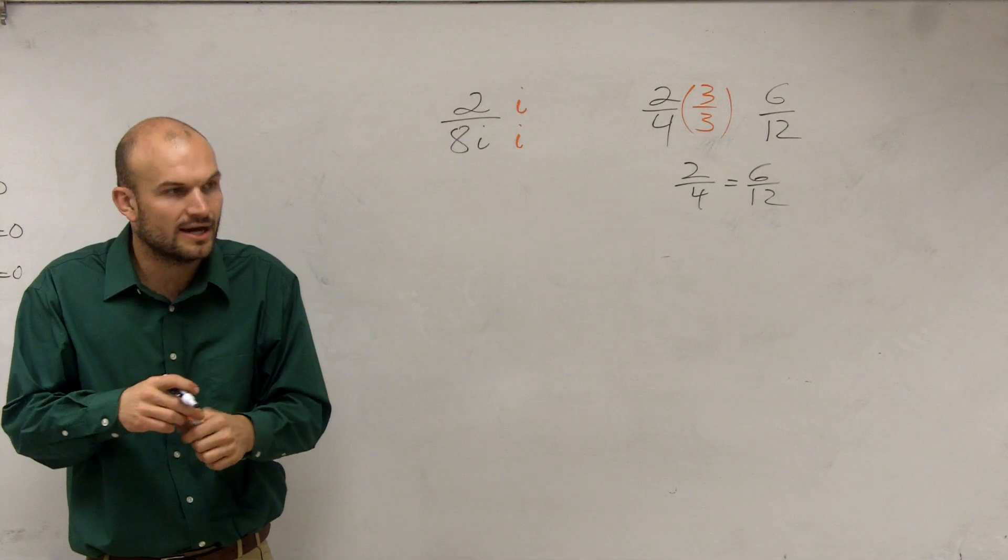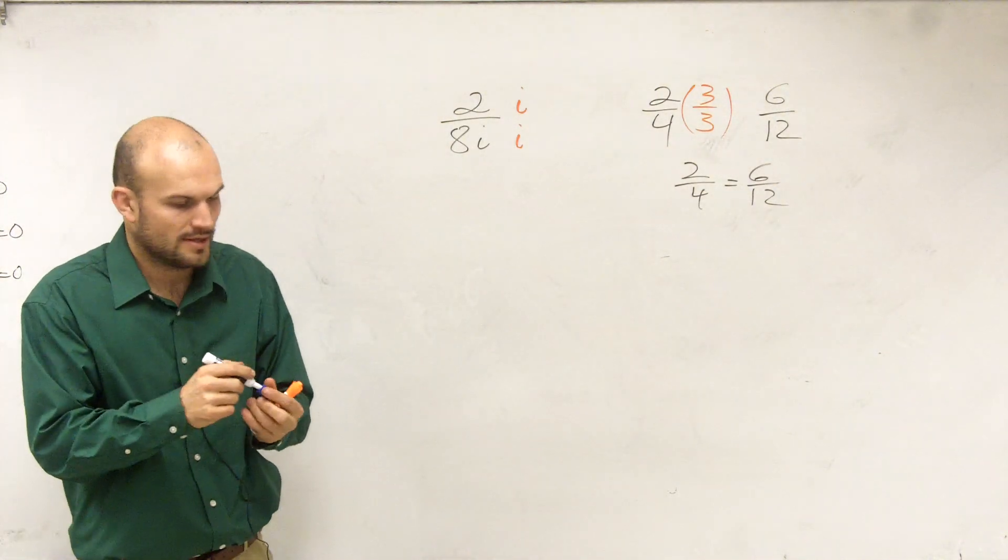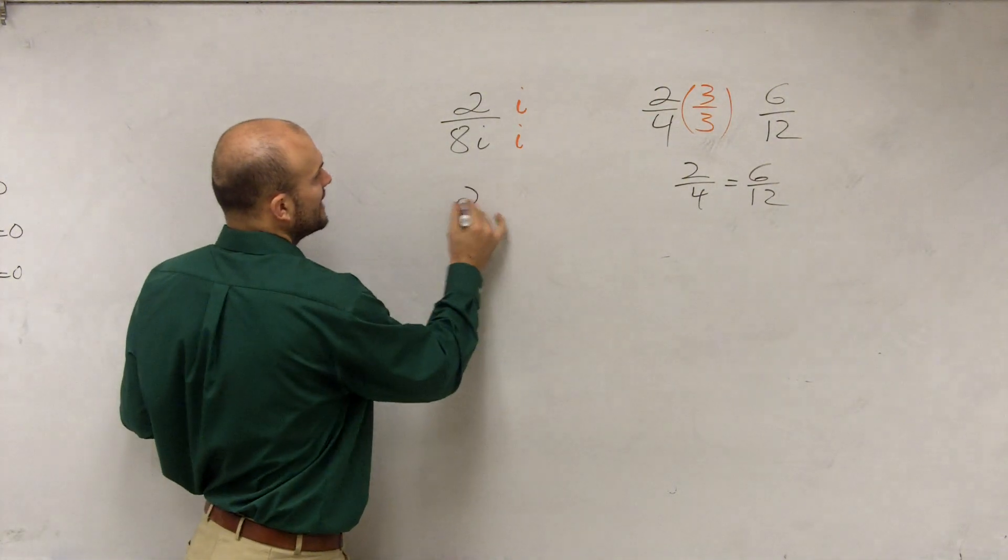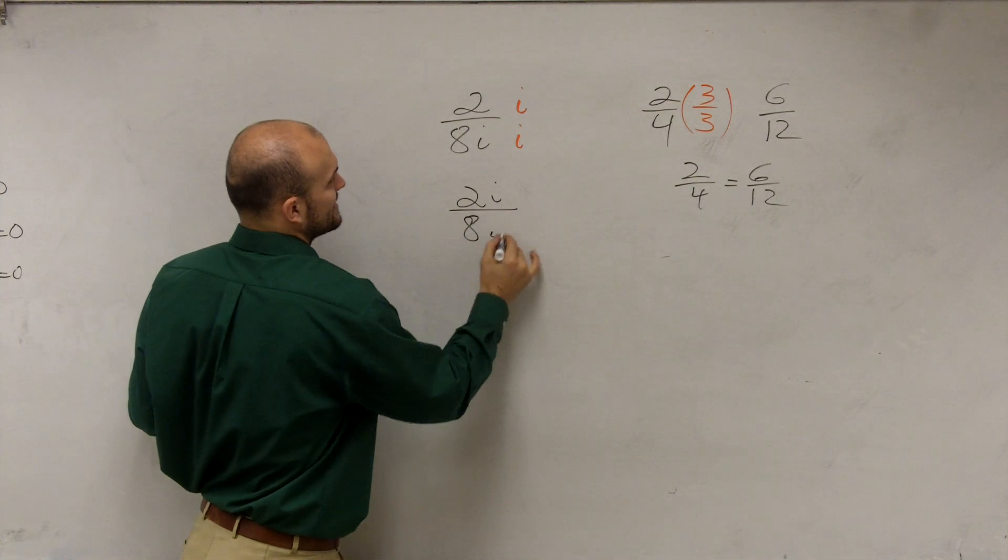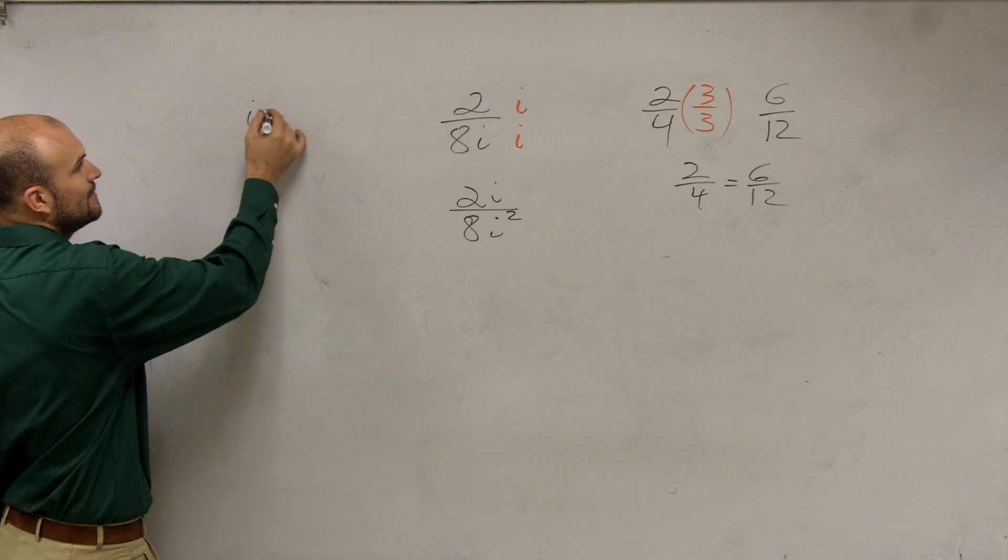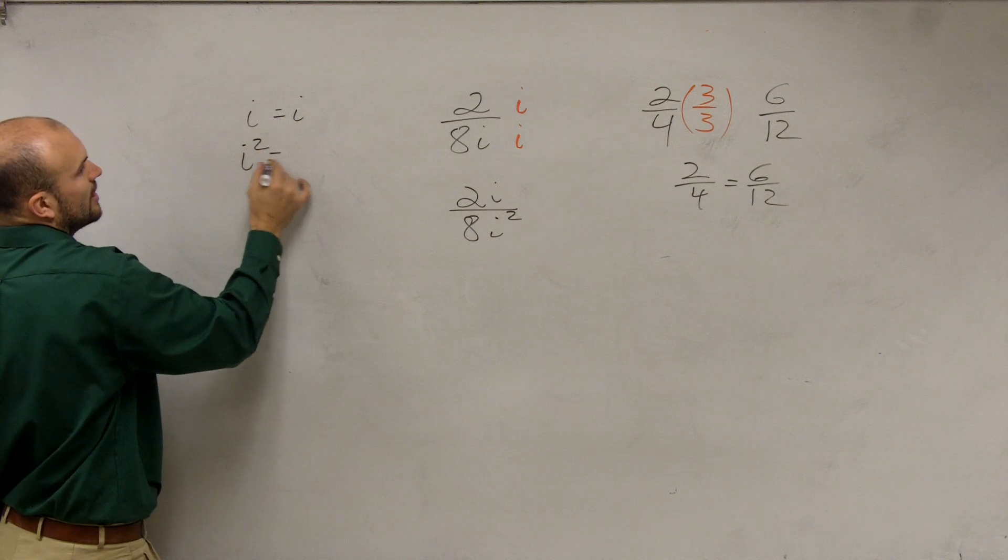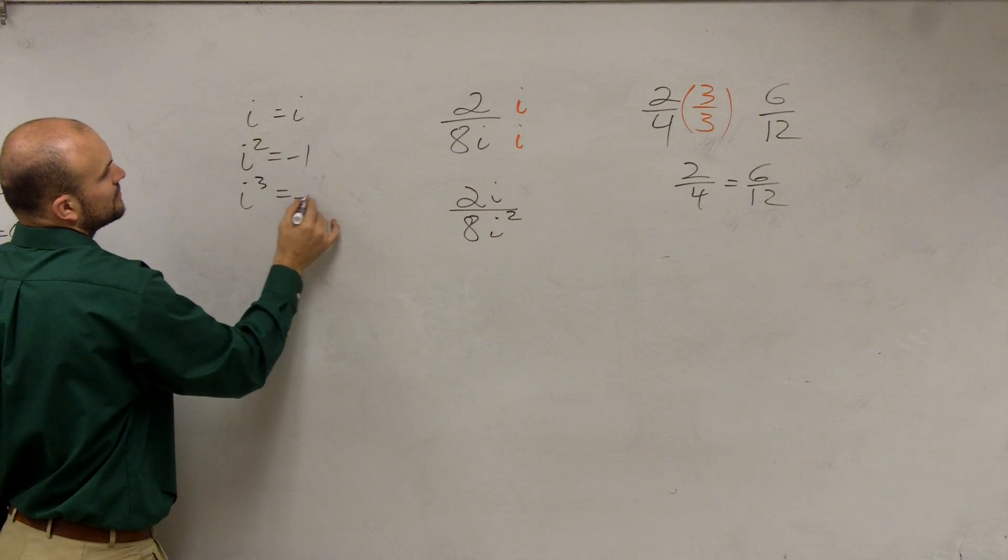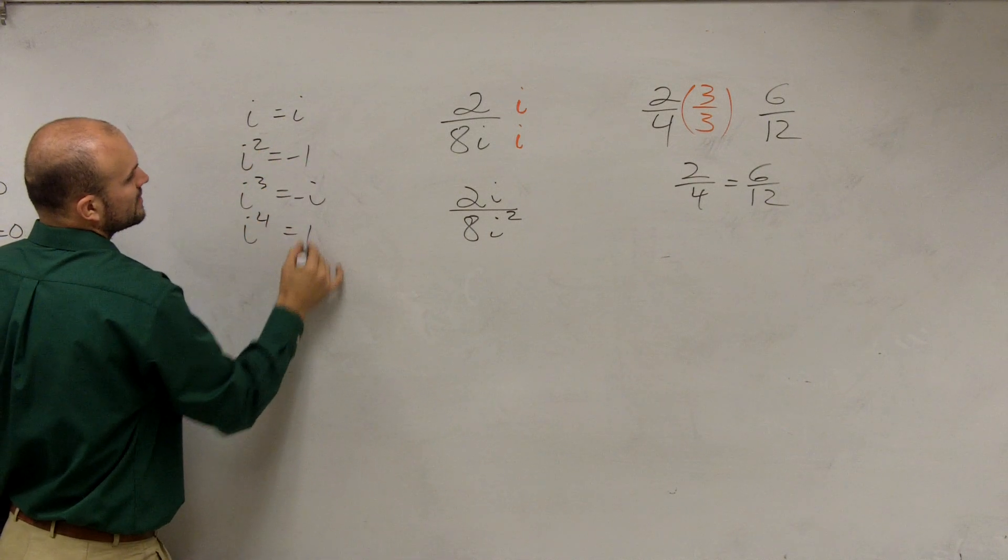So now what we have is we're going to have 2i over 8i squared. But remember, when we learned about i, we said i is equal to i, i squared equals negative 1, i cubed equals negative i, and i to the fourth equals positive 1.